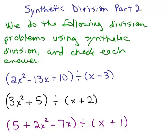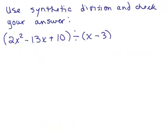This is part two of synthetic division and we do the following three division problems using synthetic division and check each answer. We're going to use synthetic division to do this long division problem. We can do it because it's a polynomial divided by a linear polynomial. You can't have an x squared or x cubed term, it can only just be an x. So x minus 3 works and we start by taking what we're dividing by and setting it equal to 0, which means it's 3 and that's the number we put in this little box here.